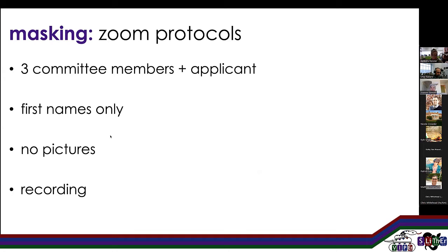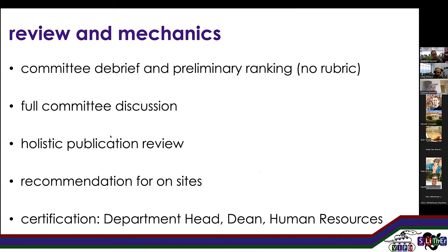After each phone interview, we did a short debrief and a preliminary ranking of our candidates: were they outstanding, acceptable, that level of ranking. Then we asked the committee to review all of our applicants for a full committee discussion. We brought in the holistic publication review. Based on this information and discussion, we made a recommendation for onsites. This was first sent to the dean and the department, who gave us a thumbs up. They were very pleased with our candidates, and we sent on to human resources to certify that we were maintaining a diverse pool. We got our certification and moved forward.